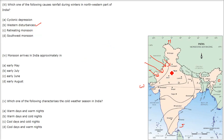Monsoon arrives in India approximately when? This is first June. So we'll answer it as early June. The answer is C.